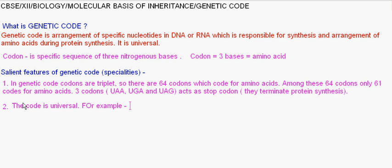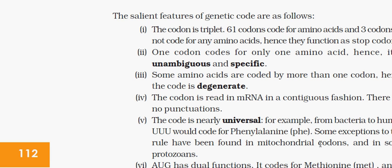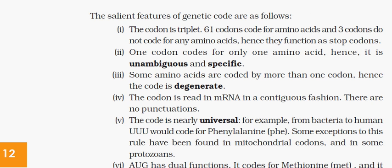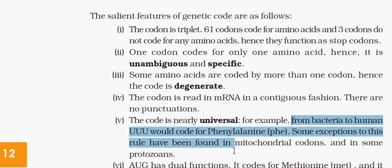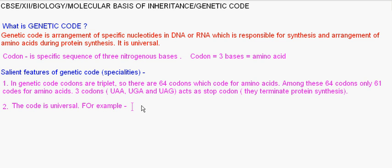For example, one codon will code for a specific amino acid in case of all living beings, from bacteria to human beings. Triple U codes for phenylalanine. There are some exceptions. For example, triple U codes for phenylalanine in all living beings. Now what is the exception? Found in codons of mitochondria, mitochondrial codons.